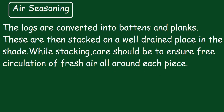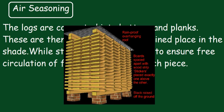The diagram depicts Air Seasoning clearly — you can see the woods are stacked one over the other. A shed is provided to ensure that no external water or moisture is introduced into the system. The planks are stacked in such a manner that air flow occurs very efficiently through them.